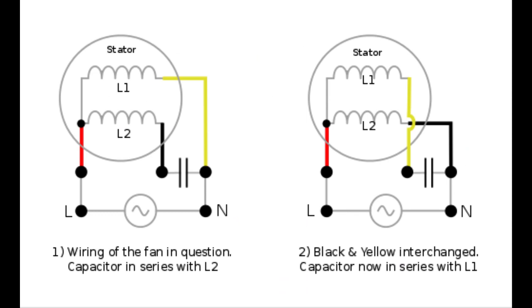Direction control: As mentioned earlier, some ceiling fans have a reversing switch to change the direction of rotation. The capacitor is involved in controlling this feature.